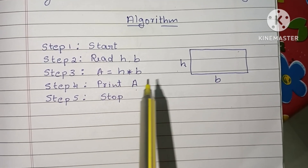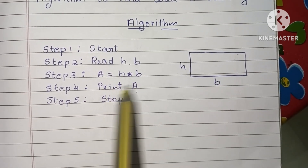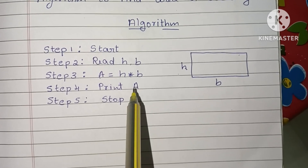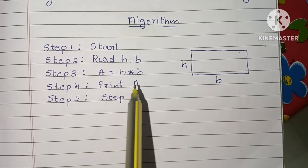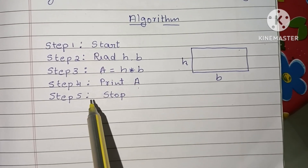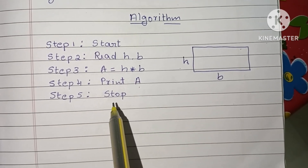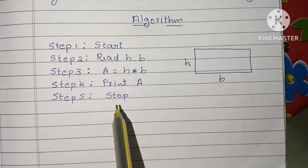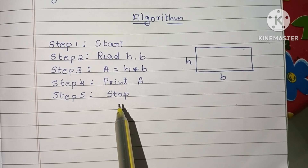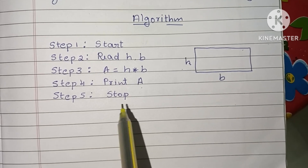Step 4: print the area of the rectangle, that is print A. Step 5: stop the algorithm using a stop statement.